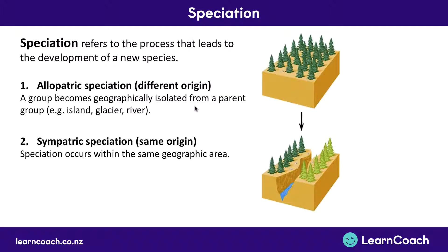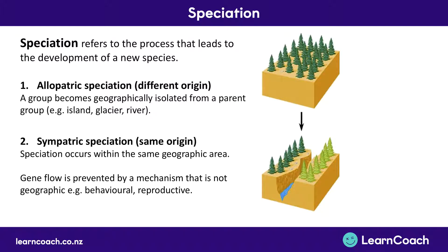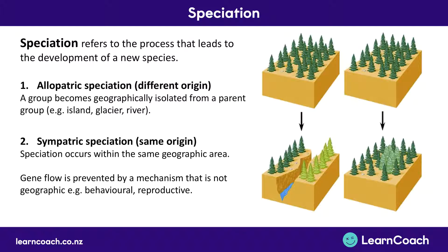Another type is sympatric speciation. This is where they have the same origin - rather than being geographically separated, their gene flow is separated by something non-geographic, such as behavioral or reproductive differences. With our pine trees, this would be like a subgroup developing right in the middle of the original patch of pine trees, but if they have different characteristics, behave differently, or reproduce differently, that means they've undergone sympatric speciation.